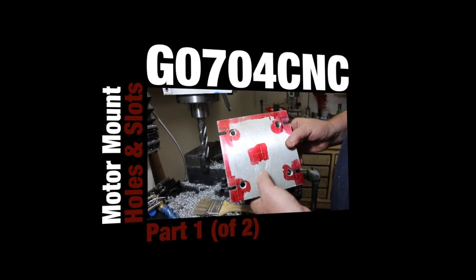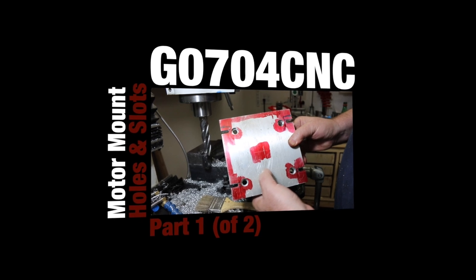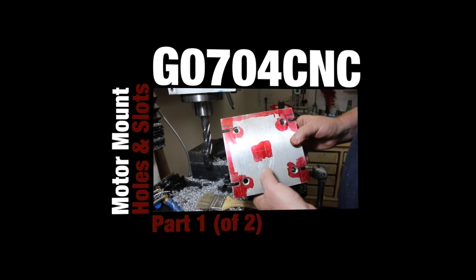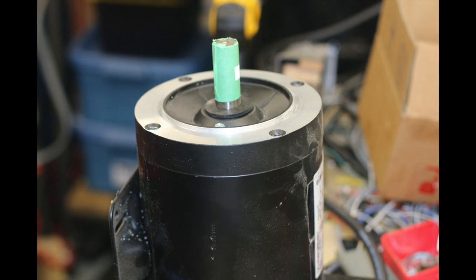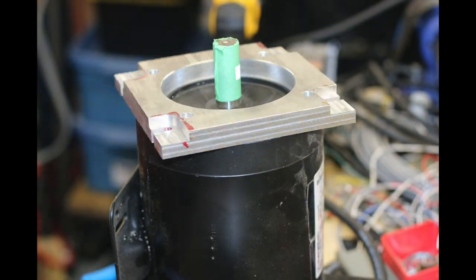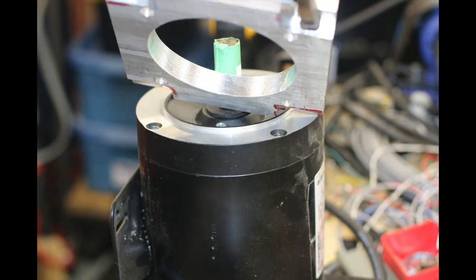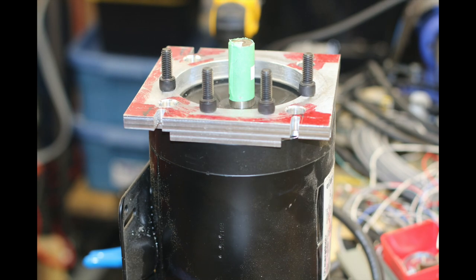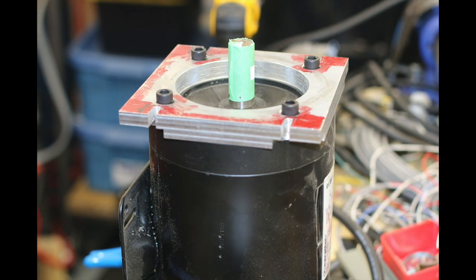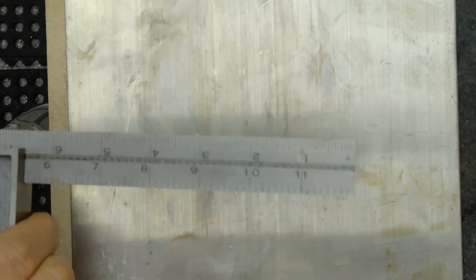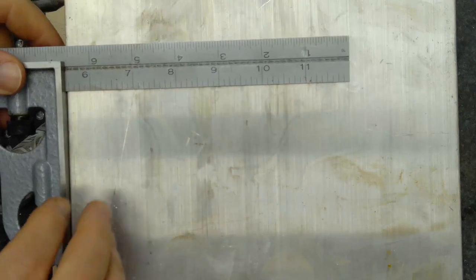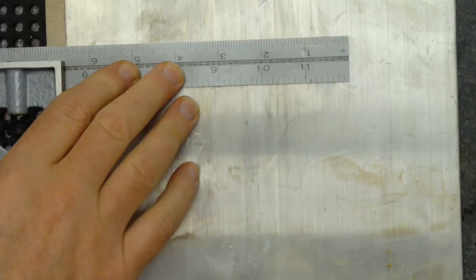So today we're making a motor mount for the G0704 CNC. This is my second conversion. We're updating the machine with a Marathon Y522 three-phase one-and-a-half horsepower motor. I've done most of the mechanical work and the control panel has been underway for some time.